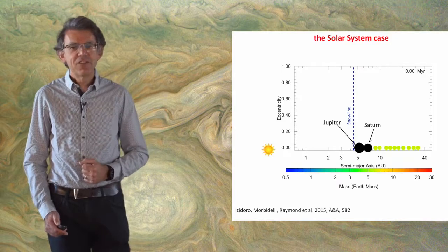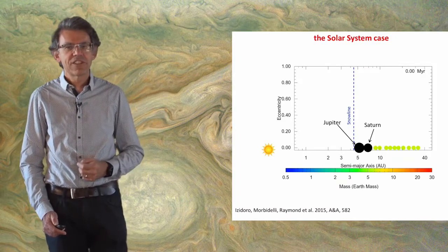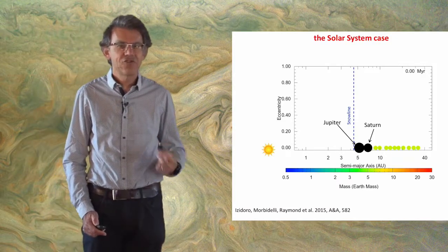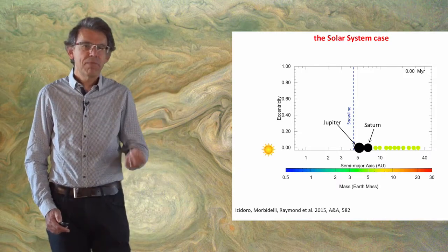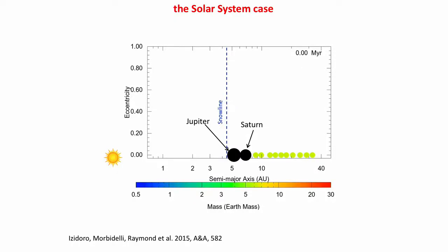In our solar system the situation was even better, because our solar system formed not just one gas giant but two: Jupiter and Saturn. Jupiter and Saturn have a mass ratio of three to one that essentially cancels migration or maybe even promotes outward migration. Jupiter and Saturn stayed more or less in place.